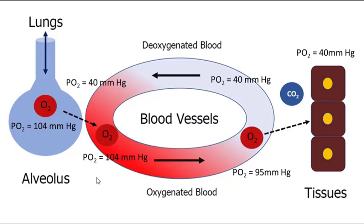The second rule is that everything is greatest at the source. The source of oxygen is the lungs — that's where it's coming in, there's a continuous supply of oxygen, so that's where the PO2 is the highest. The PO2 is about 104 millimeters of mercury in the alveolus, or the lungs. The deoxygenated blood PO2 is about 40 millimeters of mercury.